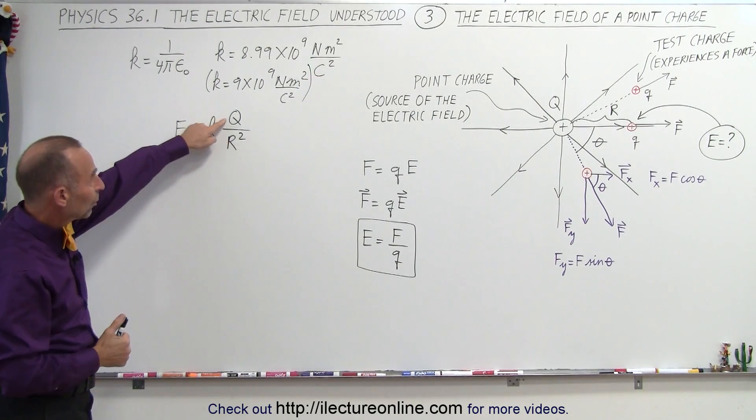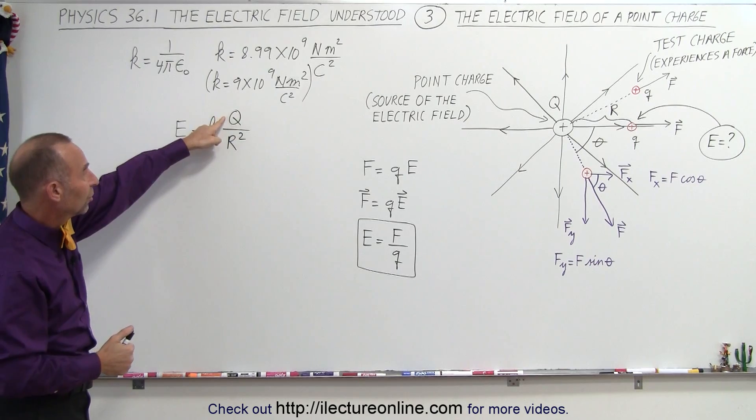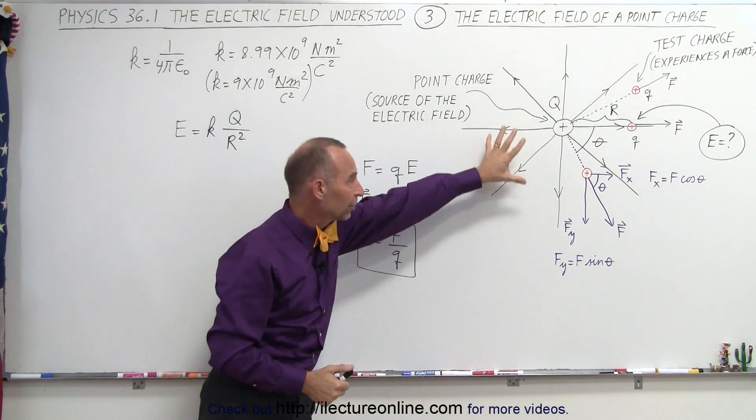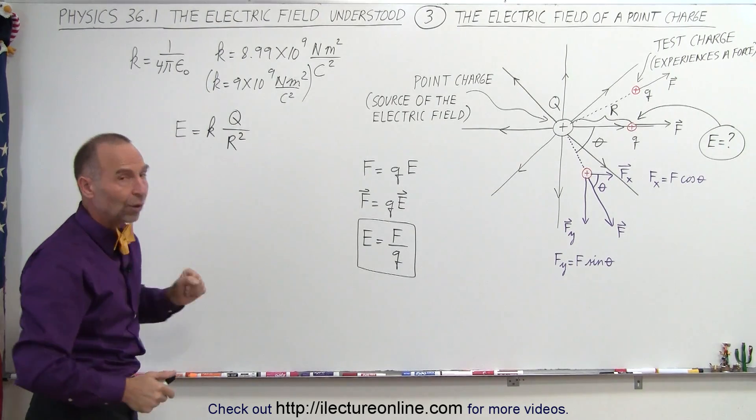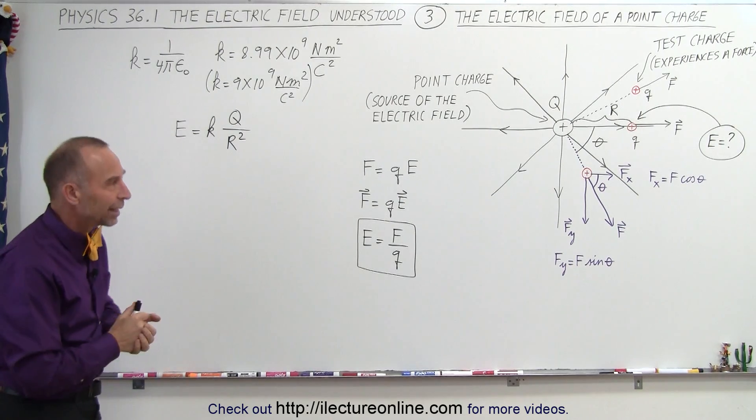Okay, so now we know the constant. When we plug in the size of the charge, the charge that causes the electric field, the point charge, and divide by the distance from the point charge squared, that gives you the strength of the electric field. So that's how we would calculate that field.